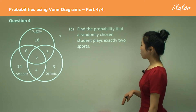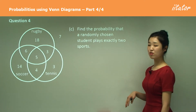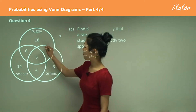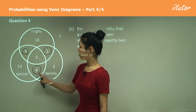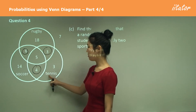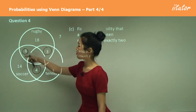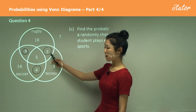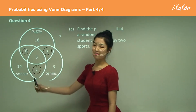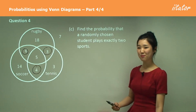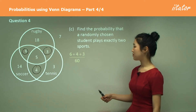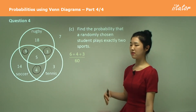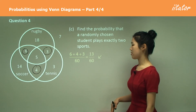Part C: find the probability that a randomly chosen student plays exactly two sports — not three, not one, exactly two. That's indicated by the numbers in the two-sport overlap regions: four out of 60 for soccer and tennis, three out of 60 for rugby and tennis, and six out of 60 for soccer and rugby. We add them because it's 'or' in probability, giving us 13 over 60.